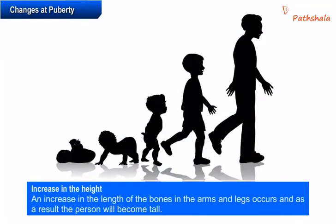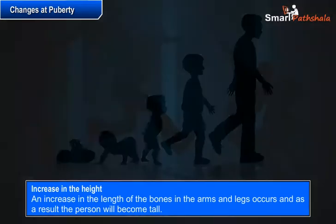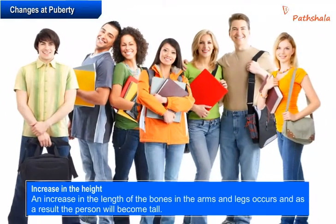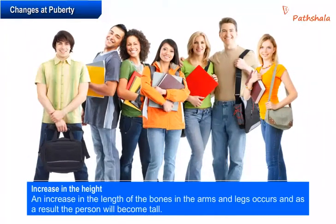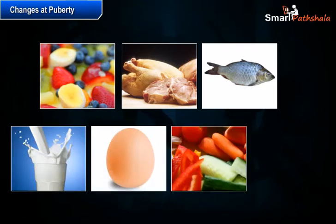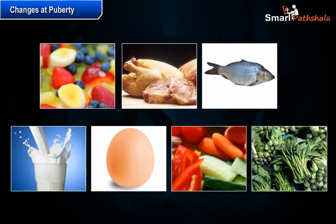The most common change during puberty is the sudden increase in height of the individual. An increase in the length of the bones in the arms and legs occurs, and as a result the person will become tall. Sometimes the arms and legs of teenagers look oversized and out of proportion with the body, but soon the growth of other parts takes place and results in a proportionate body. Adolescents should take adequate, good and healthy food as it helps in the growth of the bones, muscles and other parts of the body.